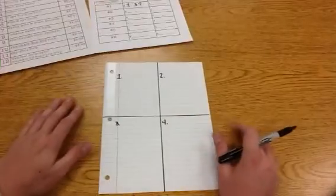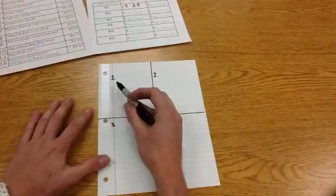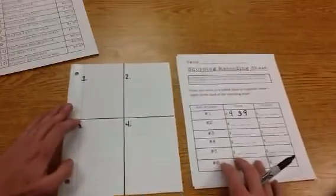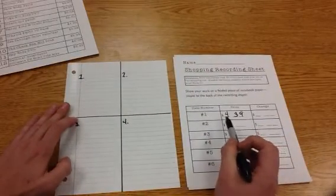You're going to want to turn to this page that looks just like this. And we're on item number one, so here's how we're going to do it. We know that item number one, our plastic ears, cost $4.39.